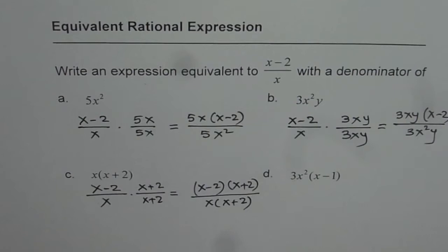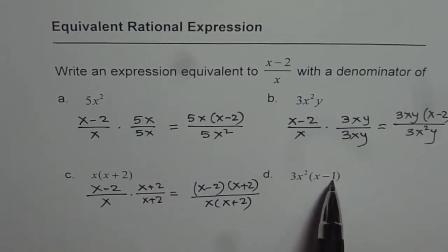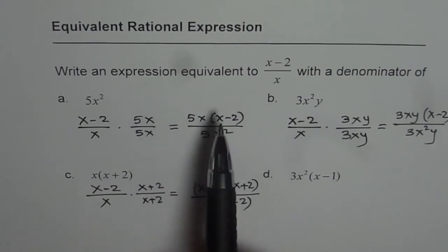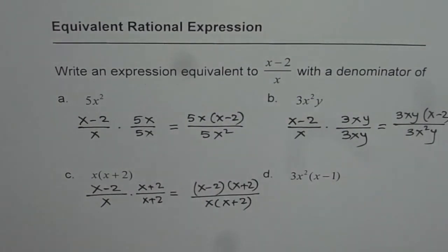The last one is for you to practice. You need a denominator of 3x squared times x minus 1, and you have to write an equivalent expression to x minus 2 divided by x. I hope you get it. Thank you and all the best.